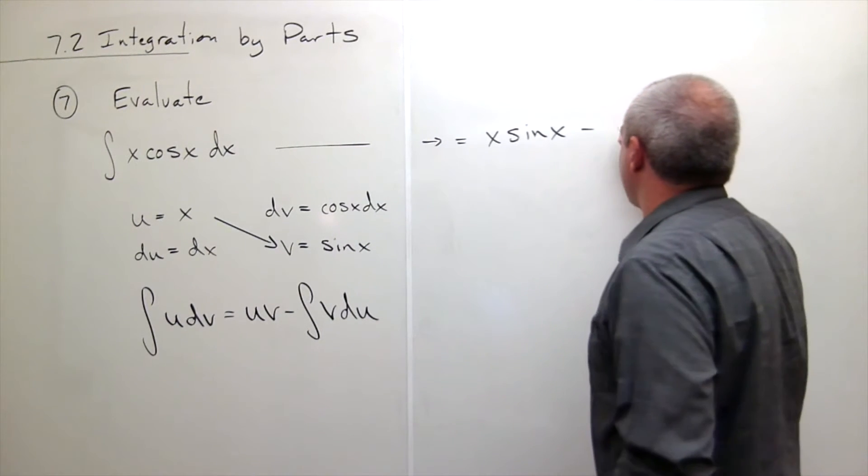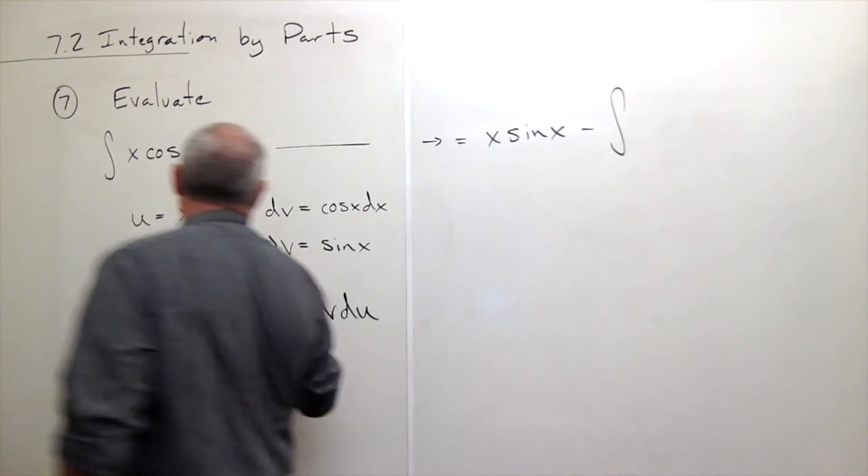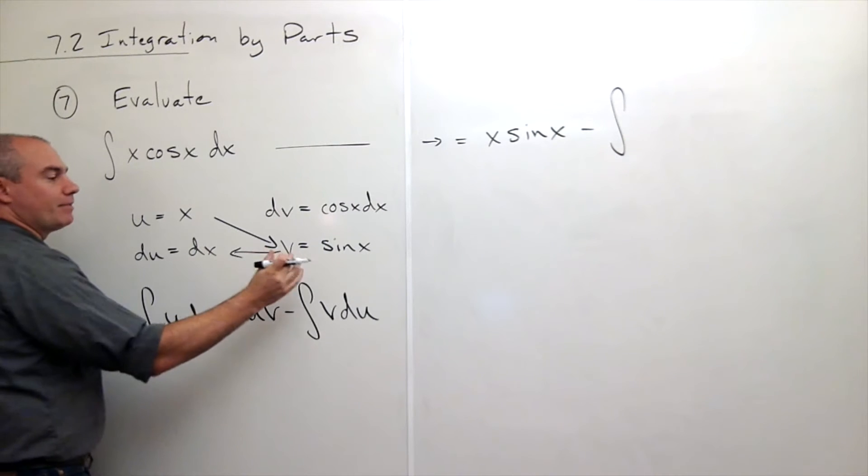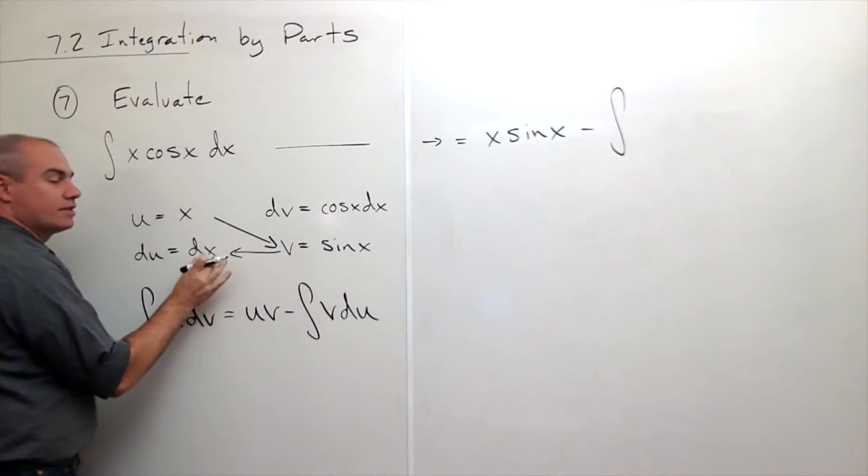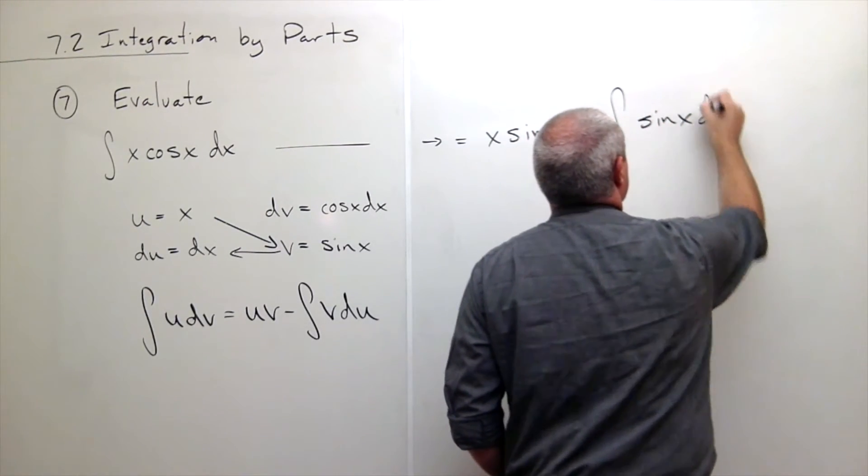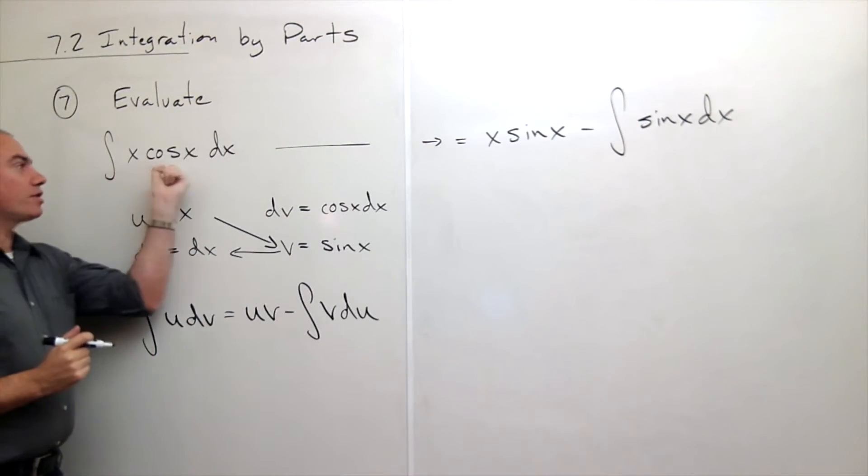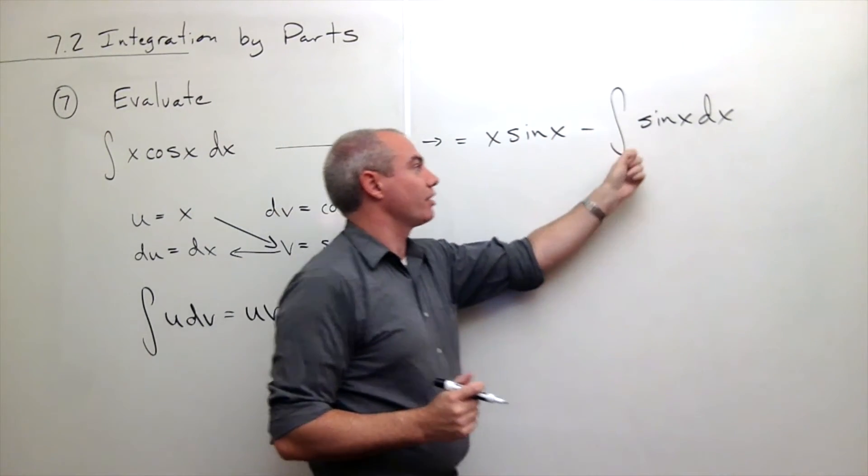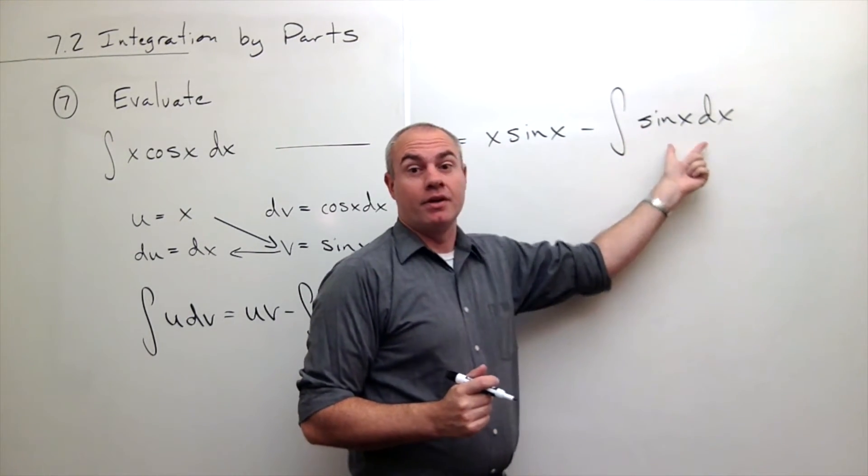Then I'm going to subtract the integral of v du. So I draw in this arrow to remind me now I'm putting in this guy times this guy. So sine of x dx. Okay, so what I've said is that the integral x cosine x dx could be written as x sine x minus integral of sine of x dx. Now this integral I can do. That's nice.